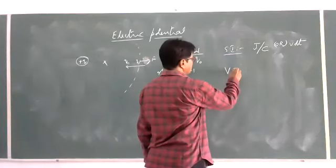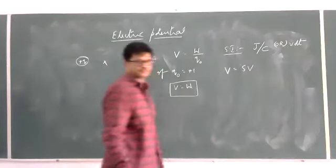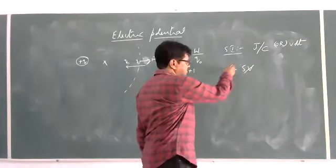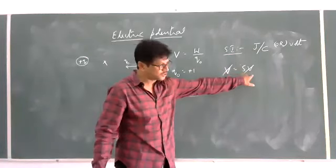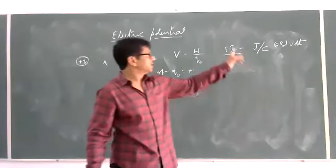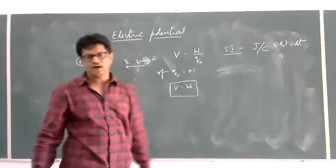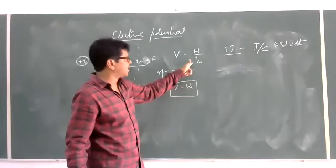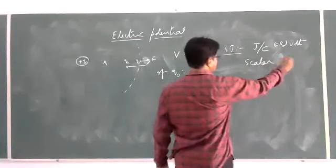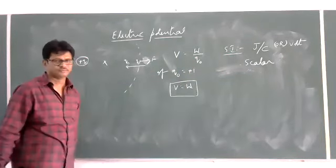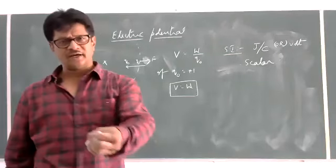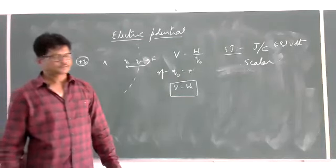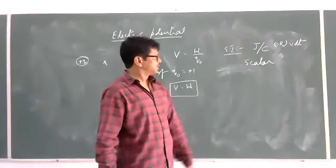Don't get confused — potential is denoted with the symbol V, and even its unit is also denoted with capital V (volt). For example, if somewhere potential equals 5 volts, don't cancel the V symbol and the V unit — this V is the potential quantity and this V is the unit. The SI unit is joule per coulomb, or volt. Since work is a scalar quantity and charge is a scalar quantity, the potential is also a scalar quantity.